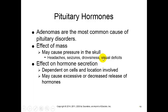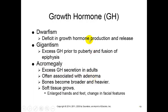Depending on the tumor - whether it's secreting hormones or not - it could have various effects dependent on what cells form the adenoma and what location has been displaced or destroyed. It could be excessive or decreased hormone release. One example of a growth hormone problem is dwarfism, where during the child's years there was a deficit in growth hormone production and release, so the child will never grow to a normal height.